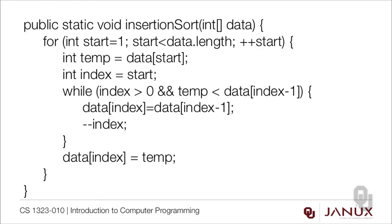Here's the code. Notice our outer loop started at position 1 and went to the end of the array. Now what I'm doing here is moving the data to temp. So temp gets the value of data of start, and our index gets the value of start.